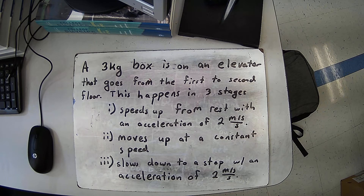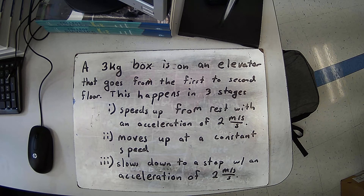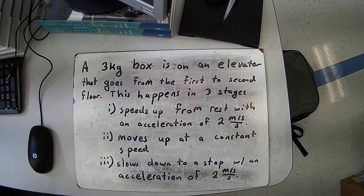This happens in three stages. First, it has to speed up from rest, and the acceleration is two meters per second each second. From there, it will move up with a constant speed — we don't want it to continuously get faster and faster. Eventually, at stage three, we want to slow down to a stop with an acceleration of two meters per second each second. Then you can get off once the elevator has slowed down to a stop.